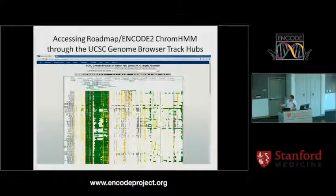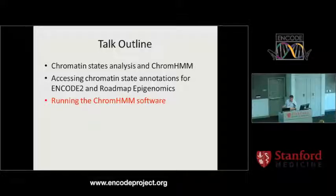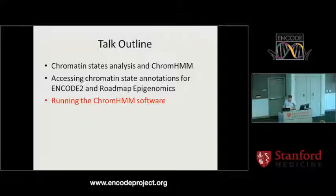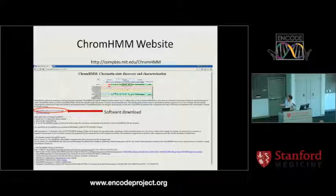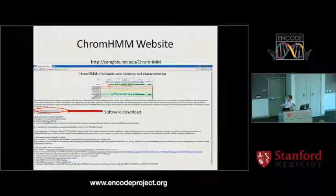These slides are on the website if you need to go through any steps again, and I'll be available at the session this evening if you got stuck. Now I'm going to talk about how to actually run the ChromHMM software if you have new data you want to annotate or want to process existing data differently. You would go to the ChromHMM website and download the software — it's about a 30 megabyte file, so it may take a few minutes depending on connection speed.